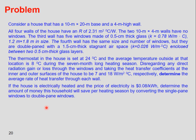In this example we are going to see how to use the thermal resistance concept to calculate the rate of heat transfer through the wall of a house. Consider a house that has a 10 meter by 20 meter base and 4 meter high walls. All four walls have an R or thermal resistance of 2.31 meter squared degree Celsius per watt. The two 10 meter by 4 meter walls have no windows. The third wall has five windows made of 0.5 centimeter glass with thermal conductivity of 0.78 watt per meter degree Celsius.